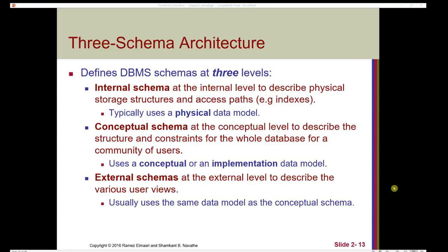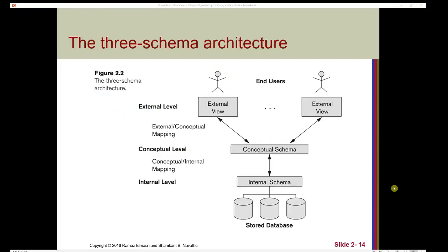An external schema is used to describe the various user views and usually uses the same data model as the conceptual schema. The end users see the external view of the schema; on the internal level we have the internal schema; and the conceptual schema provides a connection between the two. Think of the example of a house blueprint — as a person designing a floor plan, you don't necessarily need to know what materials the floor is going to be made of. The builder of the house, however, needs to know the materials and exactly how things are going to be laid out — this is information at the internal level.